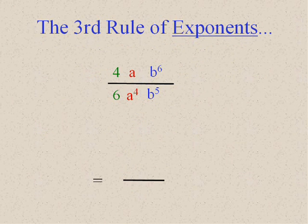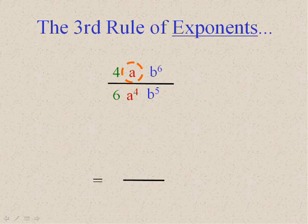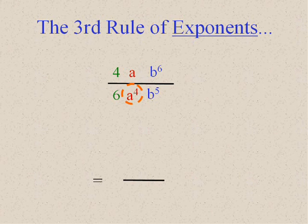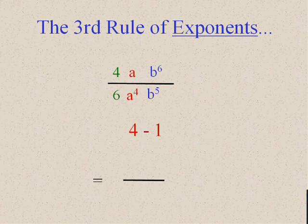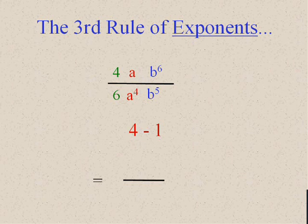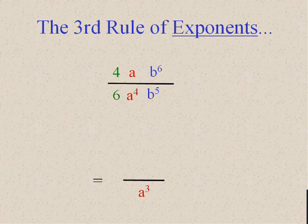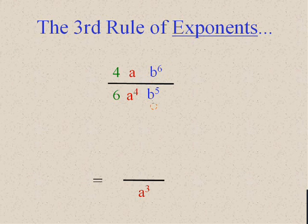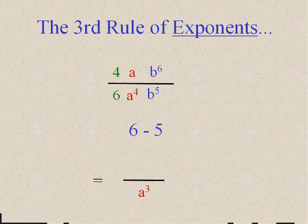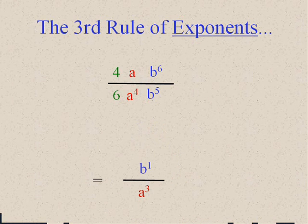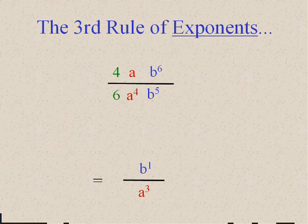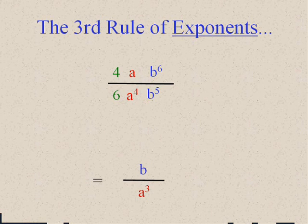Well, let's use that rule when we do this problem. That's really a to the one-th and a to the fourth. So, we're going to go four minus one, largest minus smallest, and put the answer where the largest one, the four, was. a to the third. b to the sixth and b to the fifth. Six minus five is one. Now, come on, we don't write b to the one-th. We only write b, okay? So, don't be writing ones. You'll embarrass yourself.